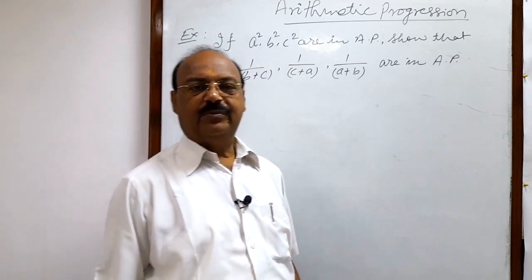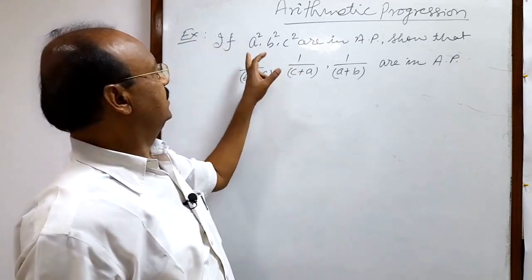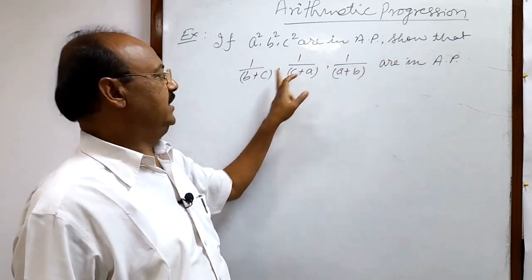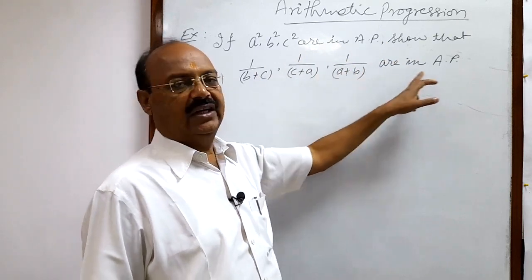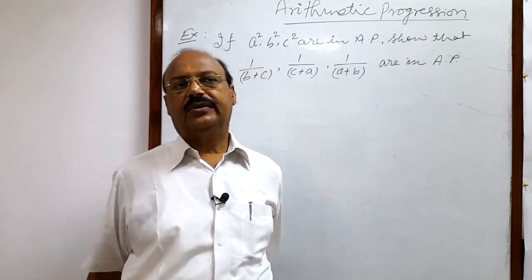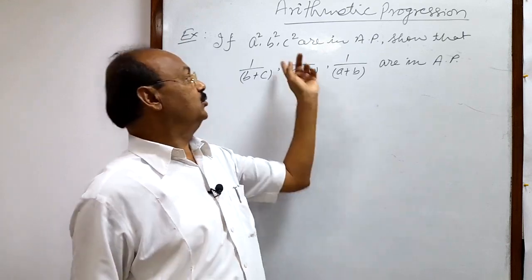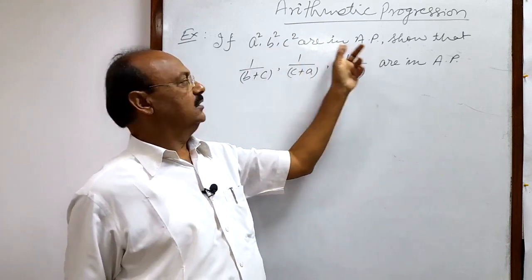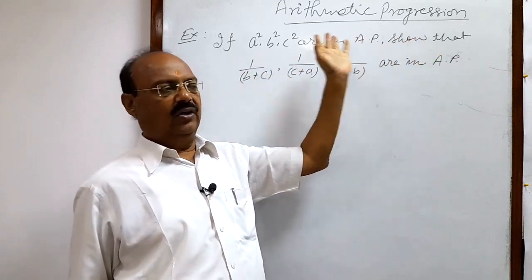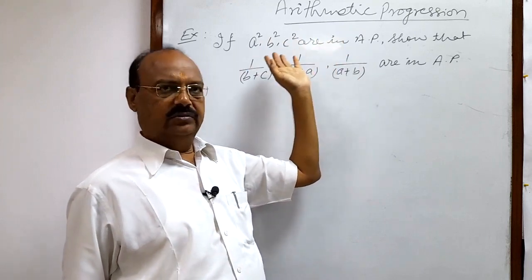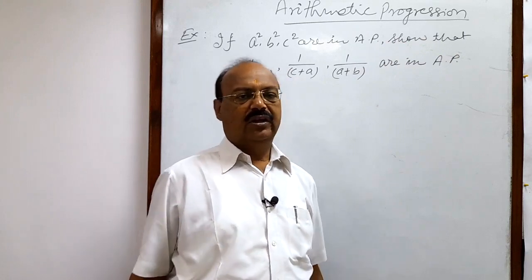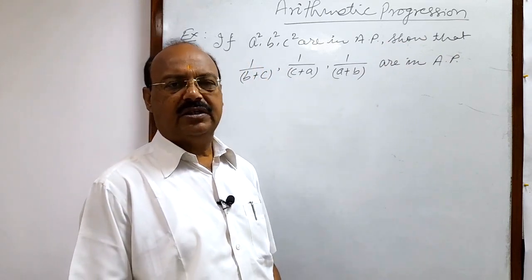Let us see a question from the topic arithmetic progression. The question is: if a², b², c² are in AP, then show that 1/(b+c), 1/(c+a), and 1/(a+b) are in AP. In the previous videos we have already discussed that in such type of problems, if any constant number is added to the given numbers, the resulting numbers will also be in AP. Similarly, if any constant is subtracted, multiplied, or divided, the resulting numbers will always remain in AP. The question is a little bit tricky but simple.